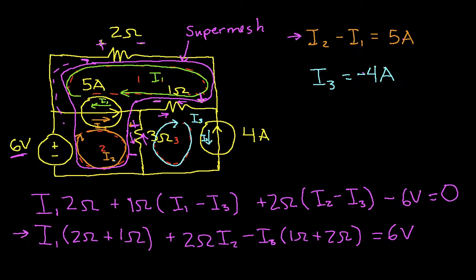So what this tells us then is I1 has a value of minus 3.2 amps. So what that really means is that this virtual current I1 is flowing opposite to the direction that we've shown it.